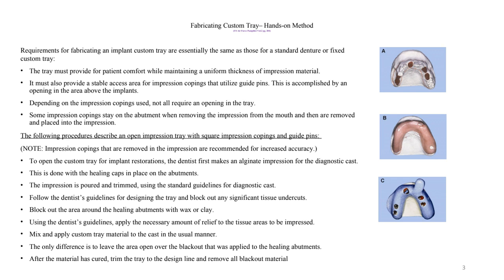Impression coppings removed from the impressions are recommended for increased accuracy. For the open custom tray for implant restoration, the dentist first takes an alginate impression for the diagnostic cast, done with healing caps in place on the abutments. The impression is poured and trimmed using standard guidelines for diagnostic casts. We have to follow the dentist's guideline for designing the tray and block out any significant undercuts. It's very important to block out the area where the healing abutments are, because if we don't, the impression material gets caught in there and might move the implant or distort the setting.